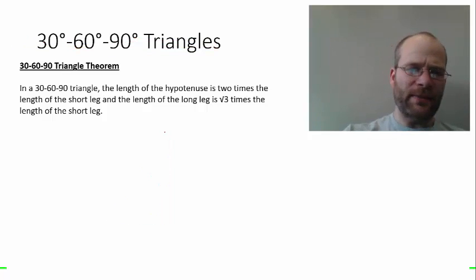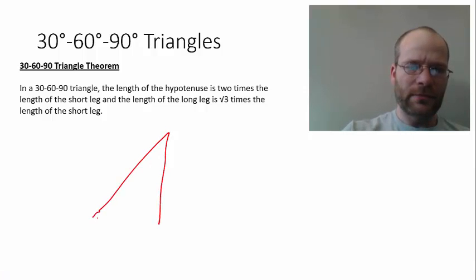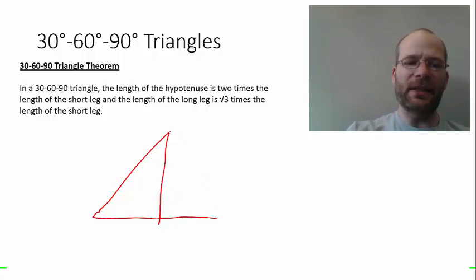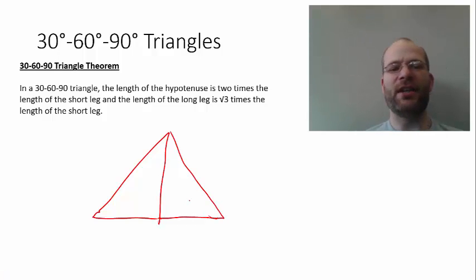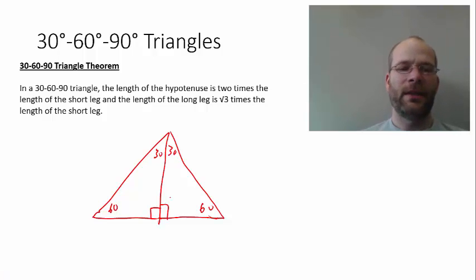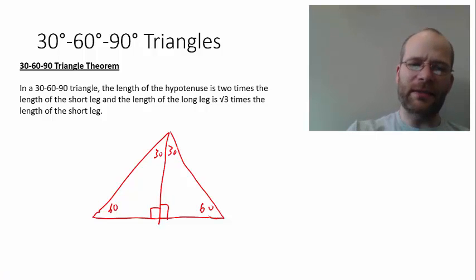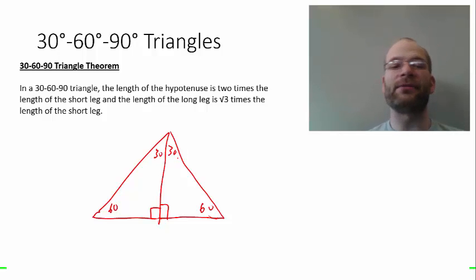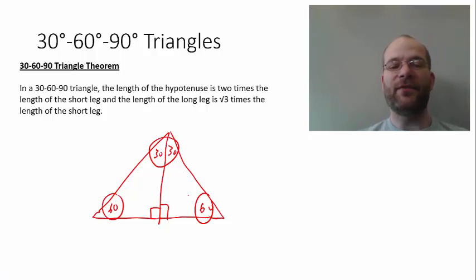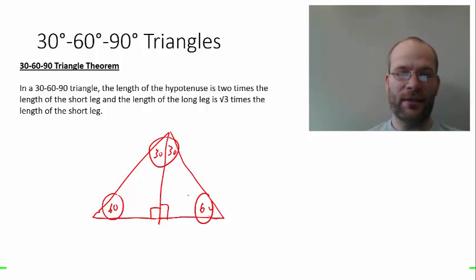The second thing to note is that if you take two identical 30-60-90 triangles and put them back to back — long leg to long leg so they share the long leg — you get a larger triangle. If the angles are 60, 30 on one side and 30, 60 on the other, with right angles in between, you can see that the result is actually an equilateral equiangular triangle with all 60-degree angles.